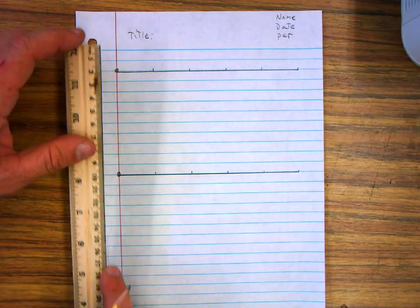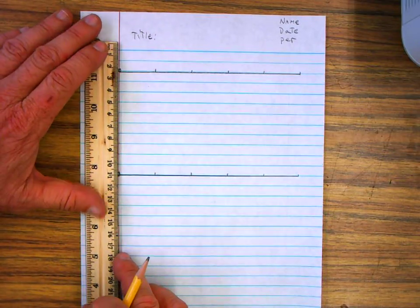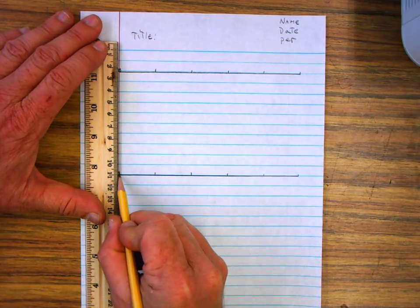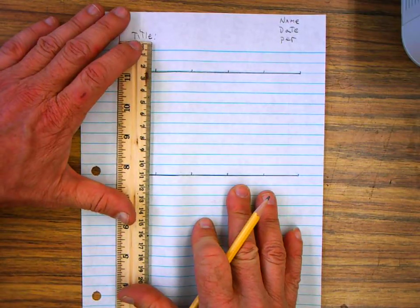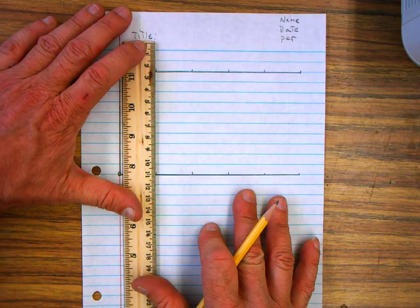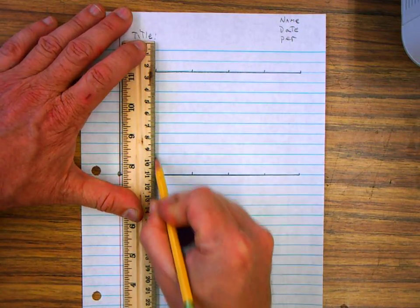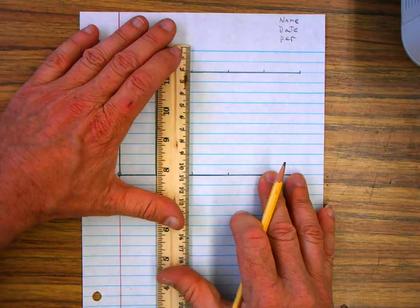Now, after you're finished with that, you're going to take your ruler, and you're going to draw a vertical line along the margin, and every three centimeters, on your marks, and go all the way across.